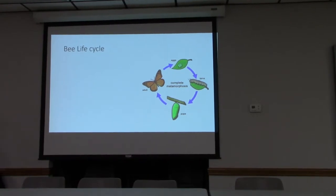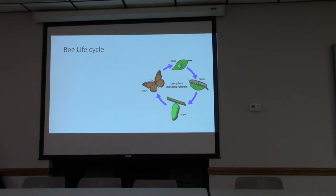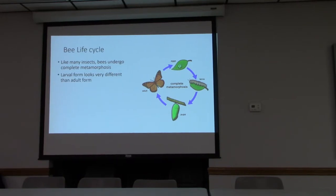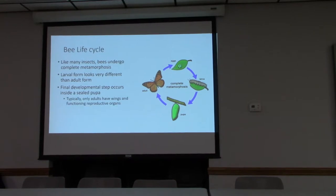Now let's get into the life cycle. Bees undergo complete metamorphosis, just like butterflies — the egg, the larva, the pupa, and then the adult. The larval form looks and works differently from the adult, and the final development occurs in a sealed pupal stage. Typically only the adults have wings and functioning reproductive organs.